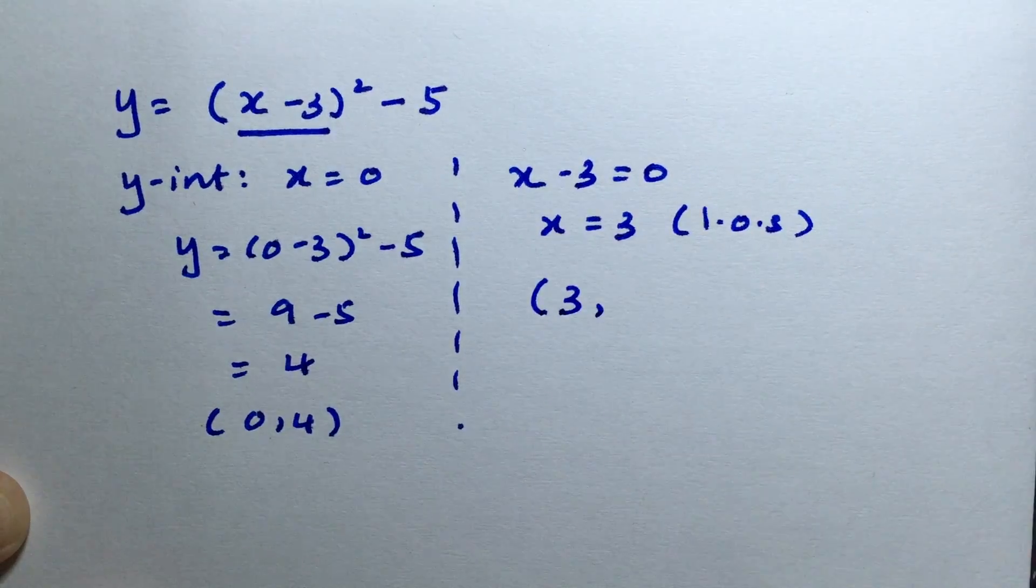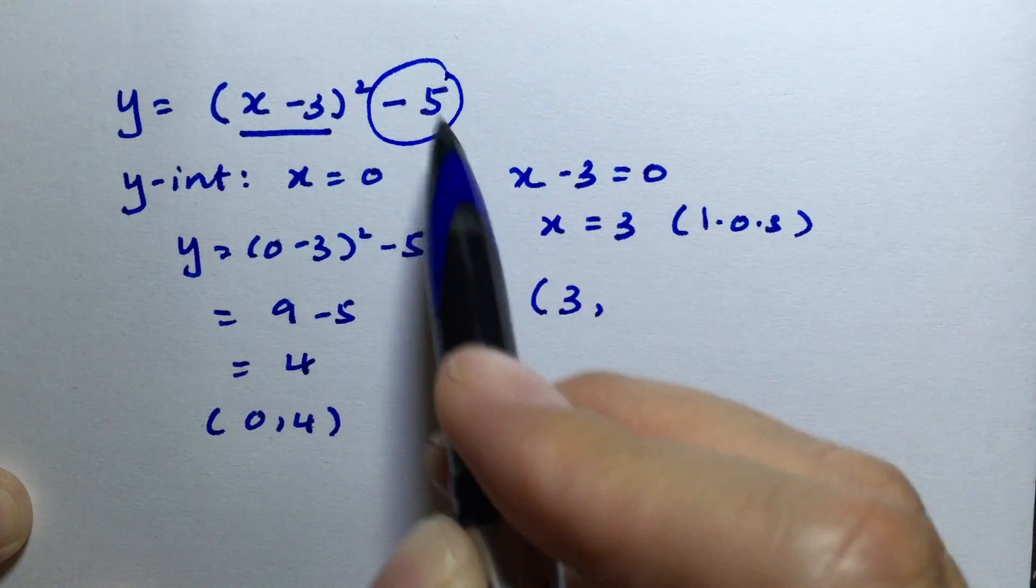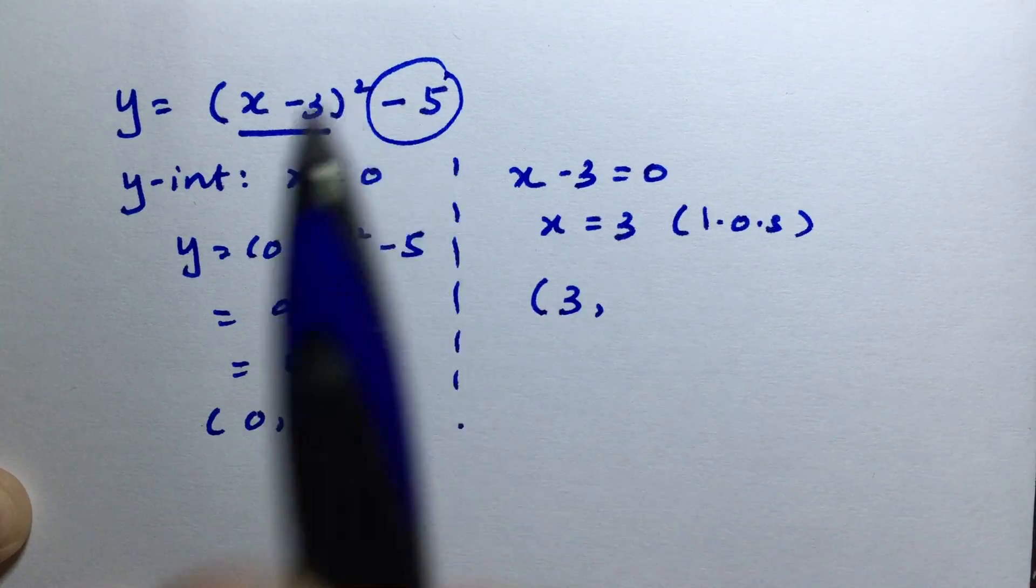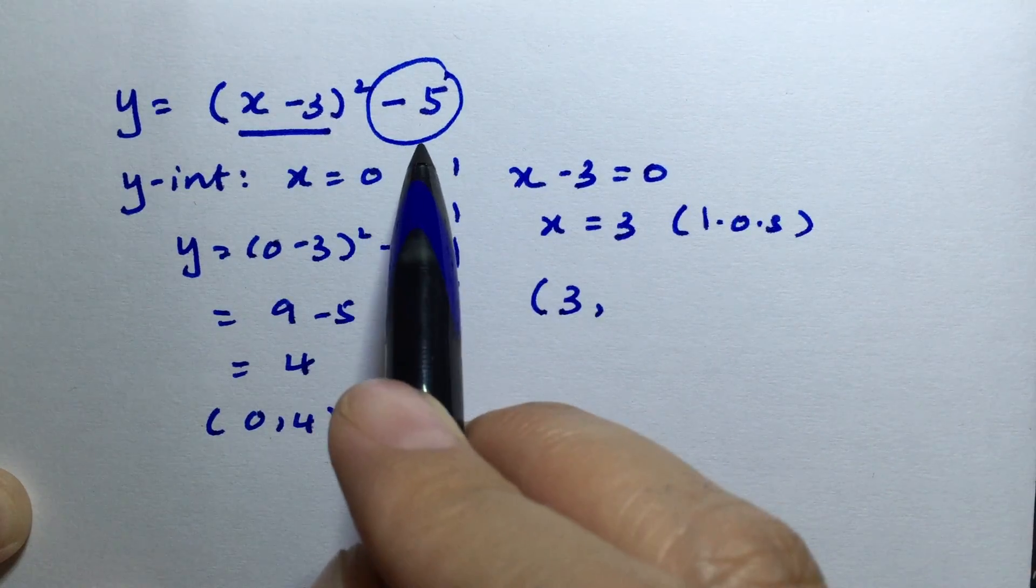Currently we have x = 3. The value outside the bracket, which is -5, gives us the y-coordinate of the turning point.